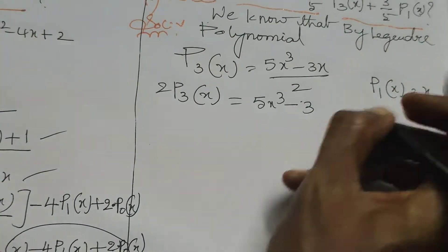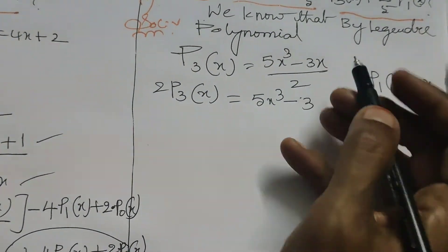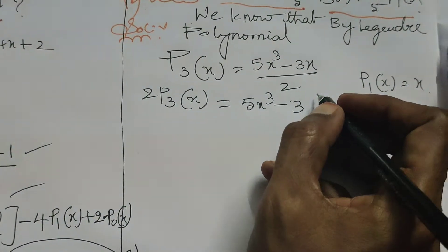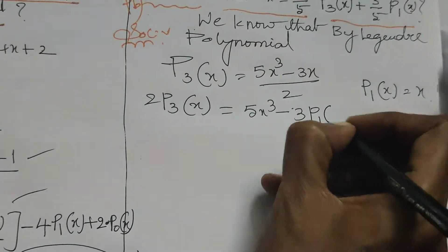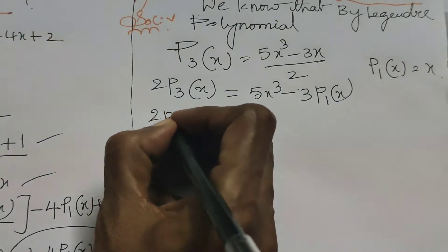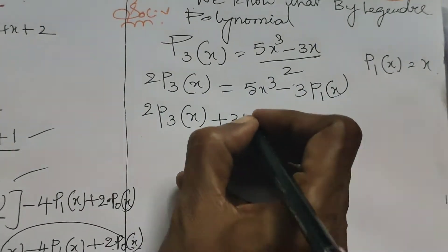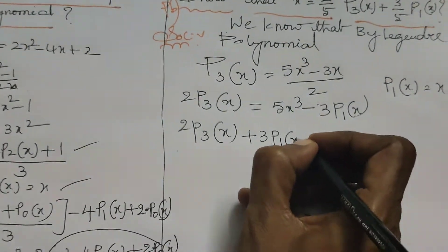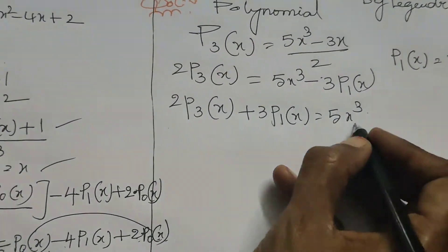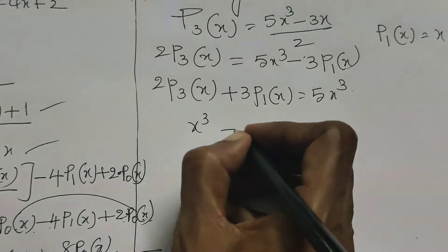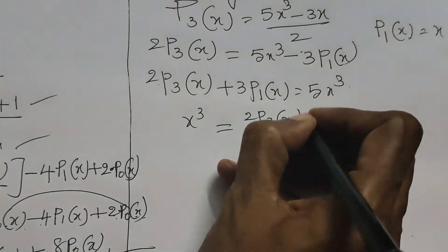We also know that P1(x) = x, so in place of x we write P1(x). Substituting: 2·P3(x) = 5x³ - 3·P1(x). Rearranging: 2·P3(x) + 3·P1(x) = 5x³.